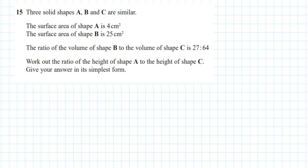We've got three solid shapes A, B, and C which are similar. The surface area of shape A is 4 centimeters squared and the surface area of shape B is 25 centimeters squared.